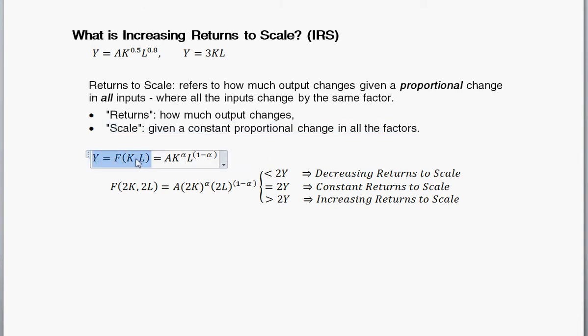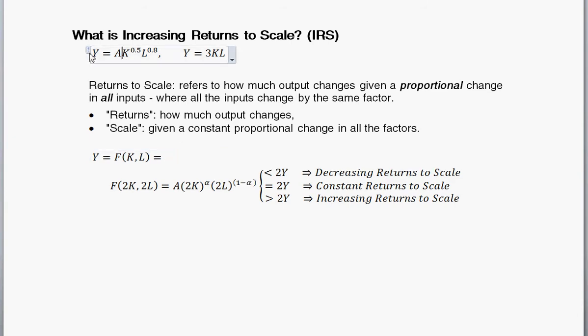Another way to deal with it is, another way to write these production functions here, is this f of and then all the factors. So, output is equal to some function of all of those inputs, capital and labor.